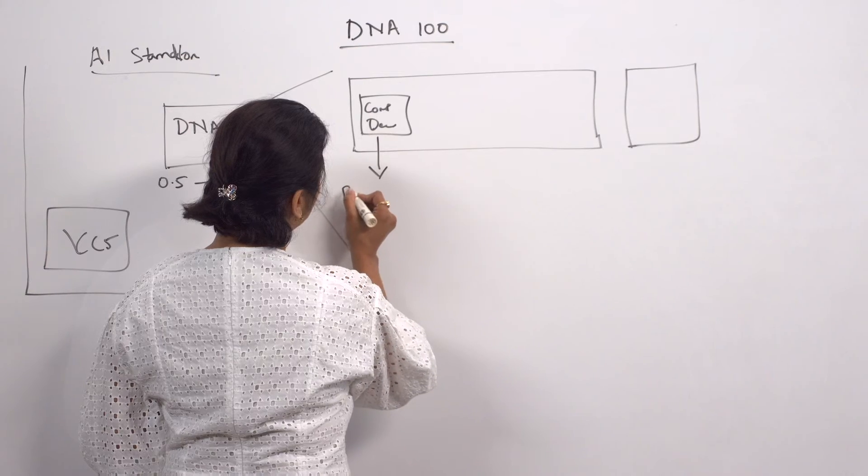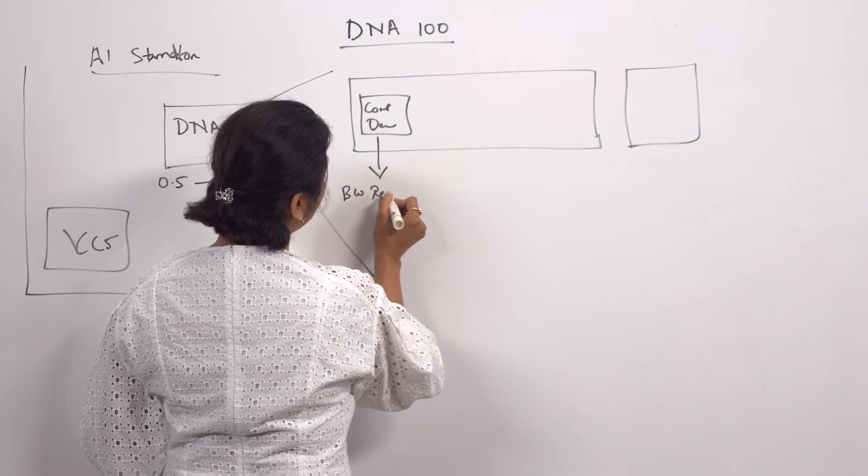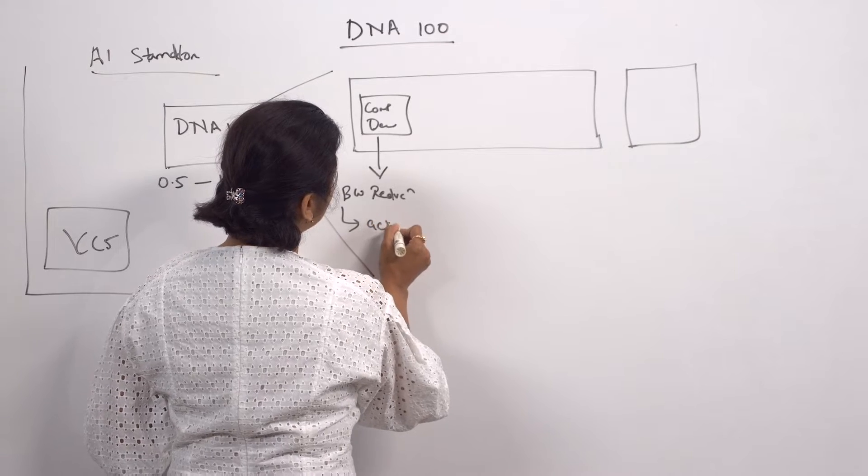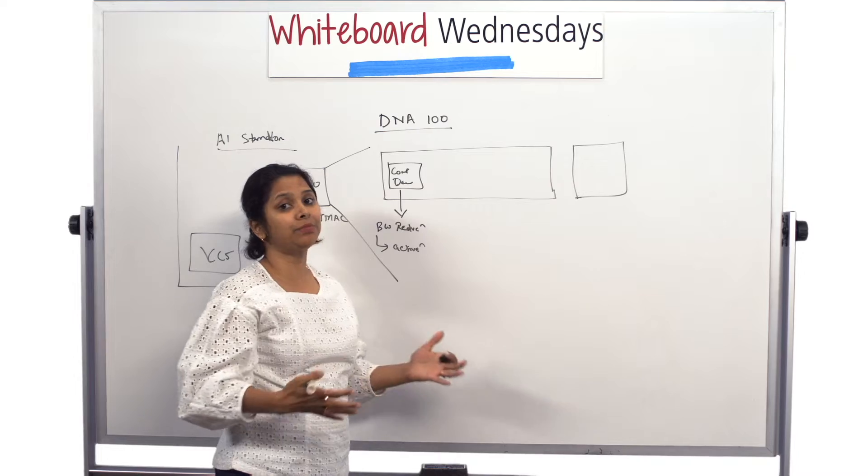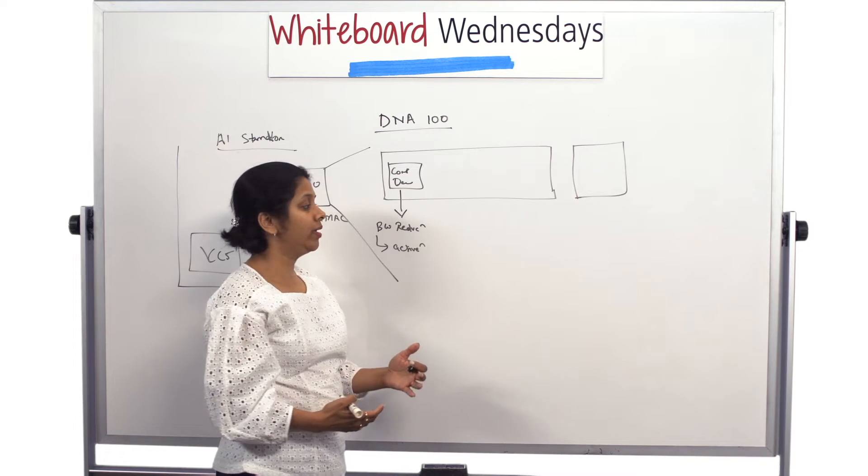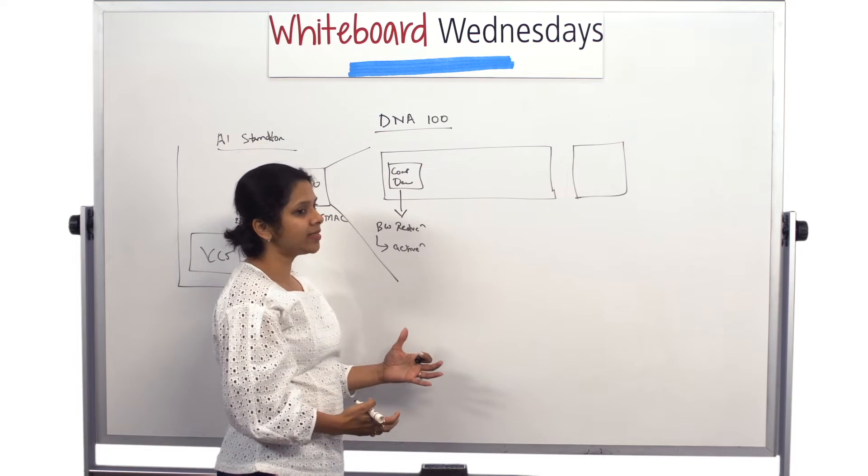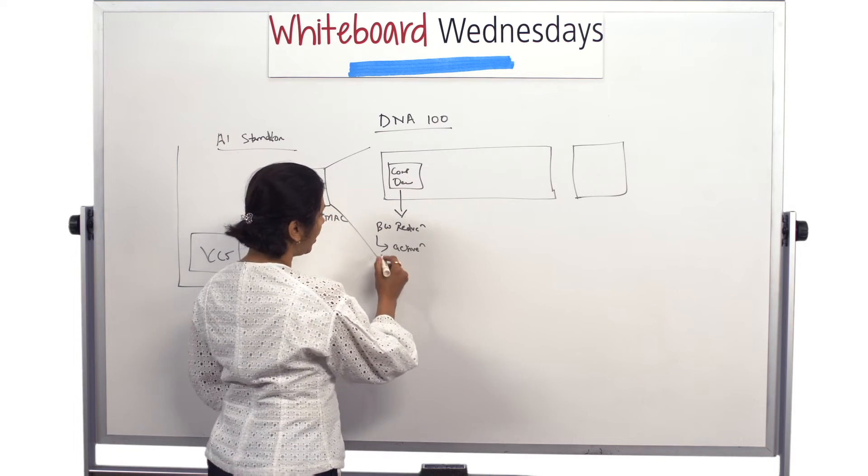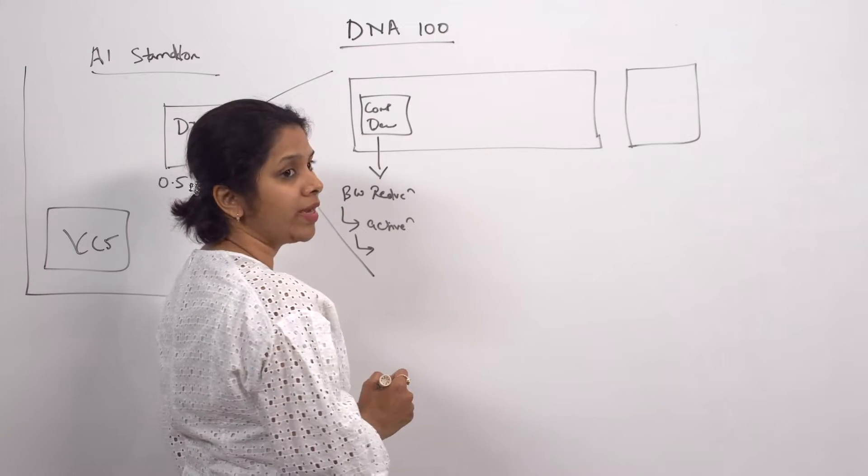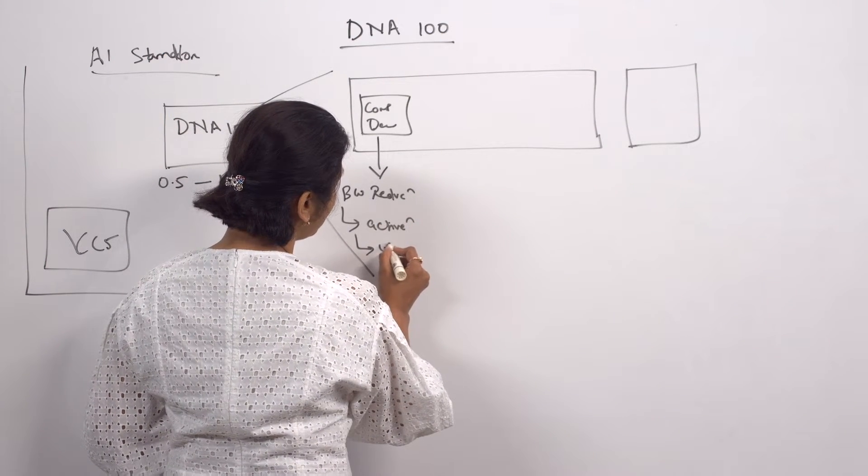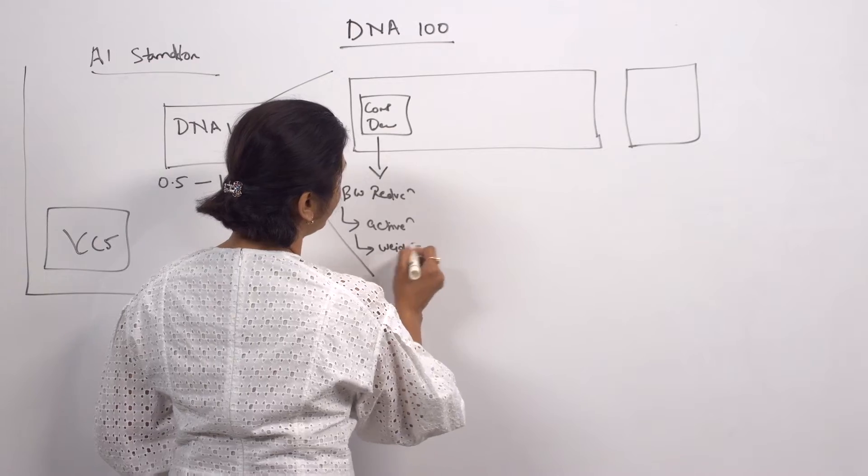And what it leads to is bandwidth reduction. Bandwidth reduction is something we need a lot because to take care of system power efficiency. There is a huge data overhead which is getting created when the data is getting loaded from the system memory into the local memories, and reducing that in every form is advantageous. So doing it for both activation and for weights helps in overall bandwidth reduction.